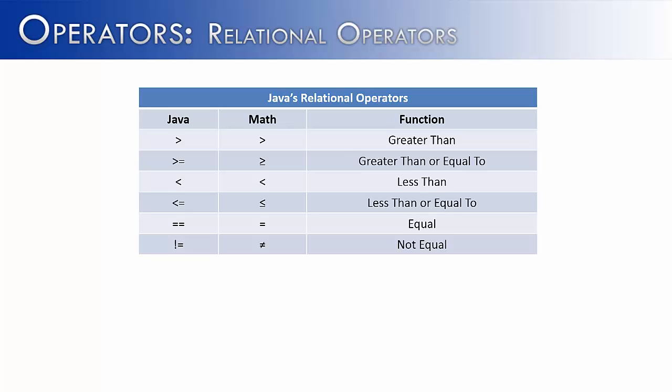Java has several different types of operators. Some examples would be arithmetic, like add, subtract, multiply, divide, or logical, like and, or, not, or exclusive or. But in this video, I want to focus specifically on relational operators.